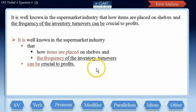So the two factors that can be crucial to profits are: how items are placed on shelves, and the frequency of the inventory turnovers.